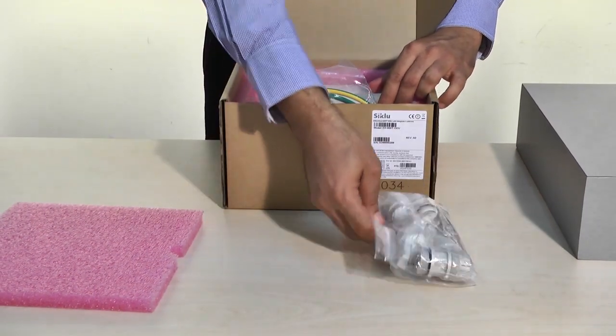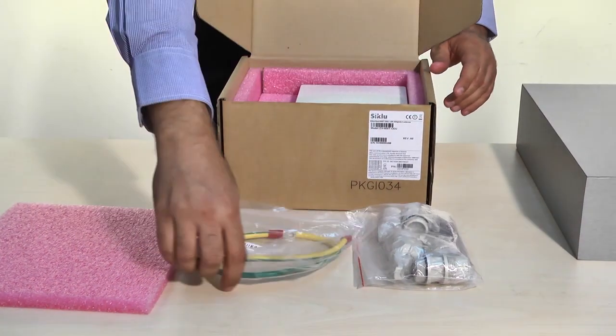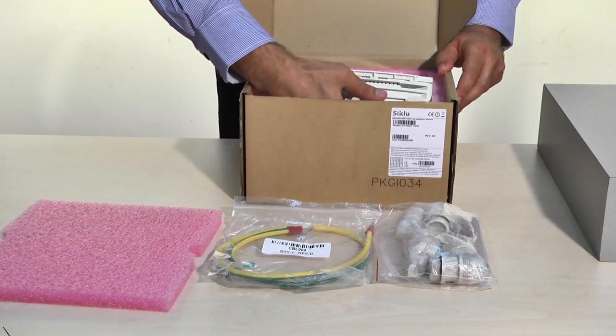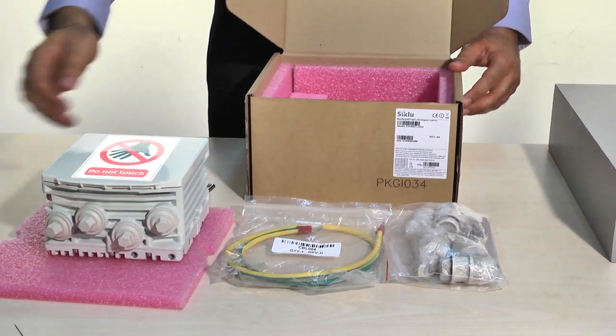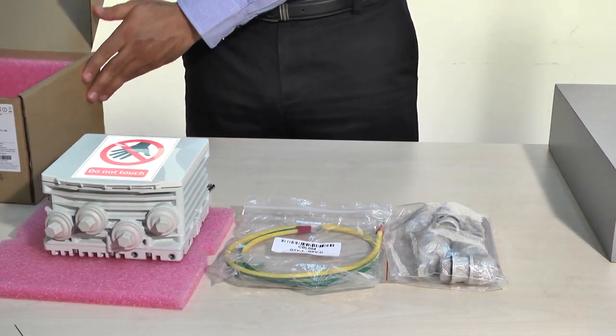Unpack the ODU and its accessories. Note that the antenna dome is treated with a hydrophobic coating designed to repel rain. Use special care to avoid damaging or scratching this coating.